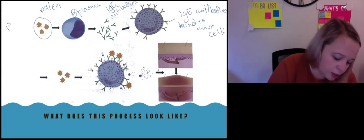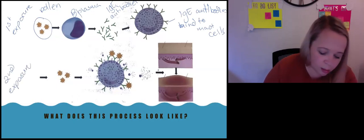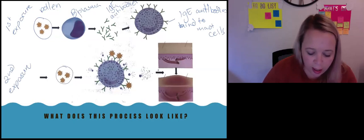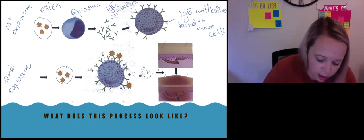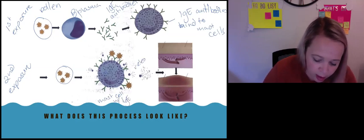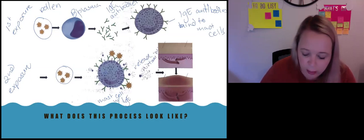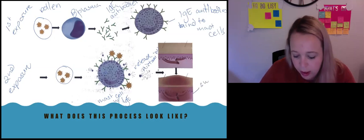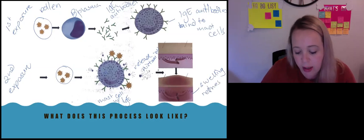So this is first exposure. This one here is the second exposure. Here's the pollen again. Now it's going to bind to these. And you can see here, it binds to the mast. This here is the mast cell with the IgE on it. We're going to release histamine. And that histamine is going to cause swelling, swelling and redness. Why? Because of that dilation of the blood vessels.